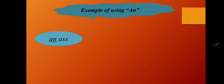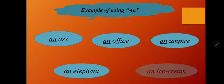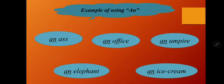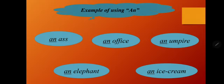Now let's see how AN is used: an ass, an office, an empire, an elephant, an ice cream. Here, 'ass' starts with 'A' — a vowel sound. 'Office' starts with 'O' — a vowel sound. 'Empire' starts with 'E' — a vowel sound. 'Elephant' starts with 'E'. 'Ice cream' starts with 'I'. Since all these begin with vowel sounds, we use 'AN' before them.